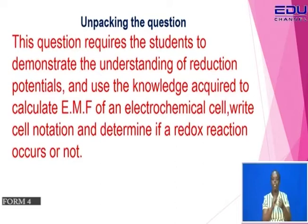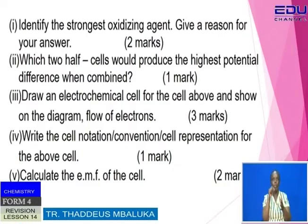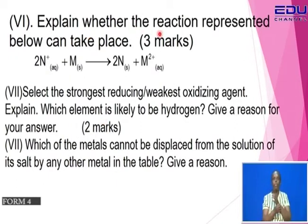Using those reduction potentials, we are supposed to calculate the electromotive force and determine if a redox reaction occurs. The questions are: identify the strongest oxidizing agent and give a reason; identify two half-cells that produce the highest potential when combined; draw an electrochemical cell for the cell above and show the flow of electrons; write the cell notation or representation for the above cell; and calculate the electromotive force of the cell. Another question is to explain whether the reaction represented below can take place.